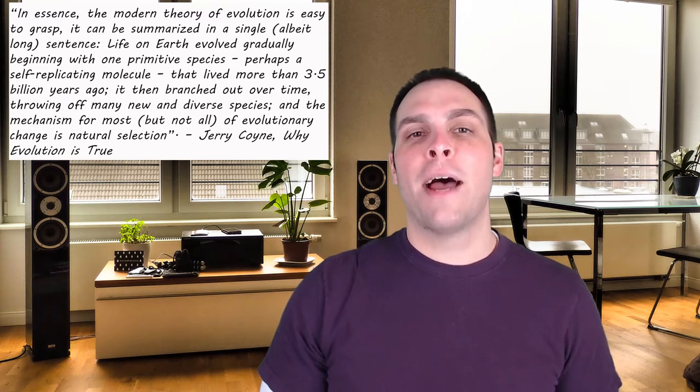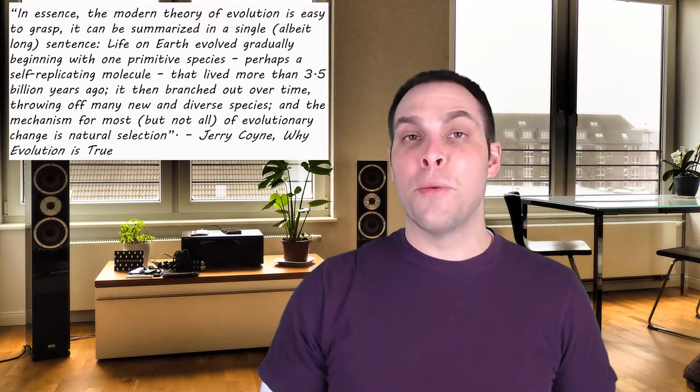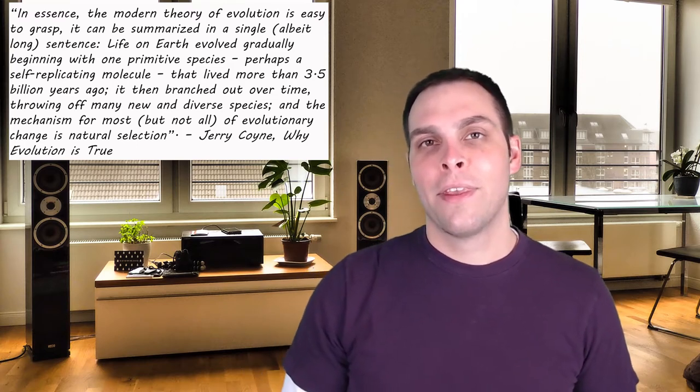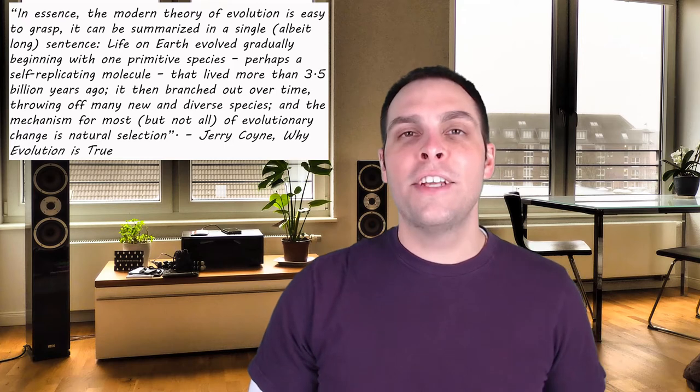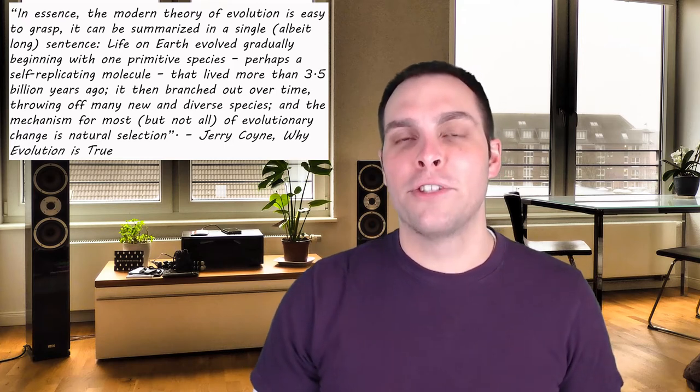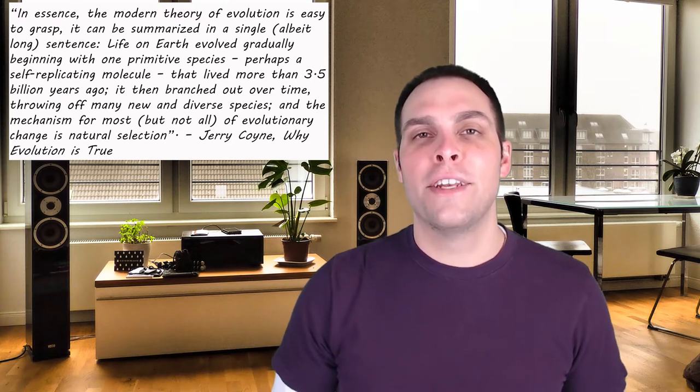Life on earth evolved gradually beginning with one primitive species, perhaps a self-replicating molecule that lived more than 3.5 billion years ago. It then branched out over time throwing off many new and diverse species. And the mechanism for most but not all of evolutionary change is natural selection.